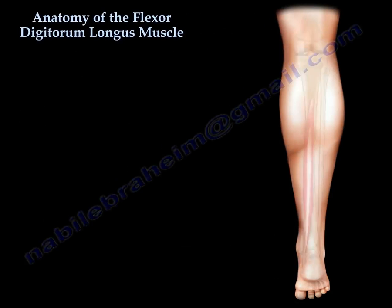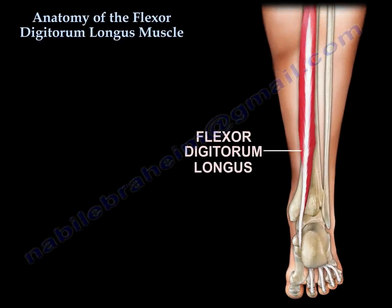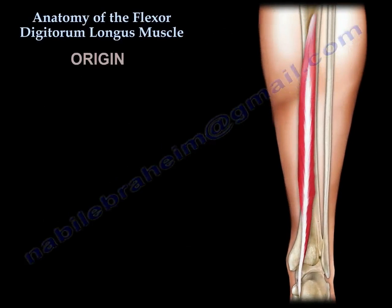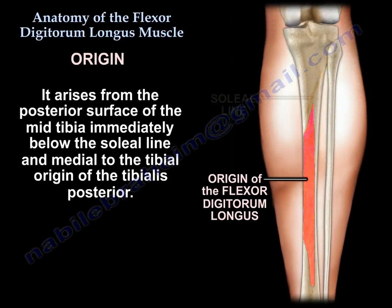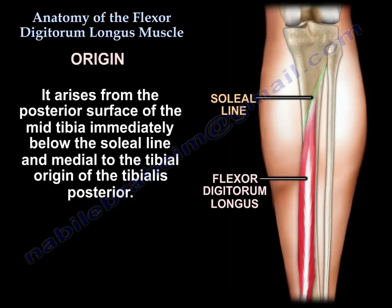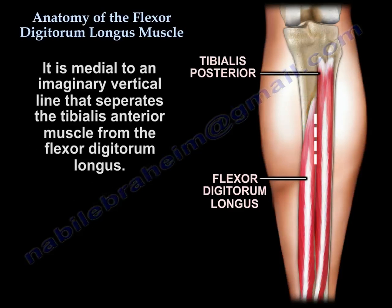Anatomy of the flexor digitorum longus. Origin: it arises from the posterior surface of the mid-tibia, immediately below the soleal line and medial to the tibial origin of the tibialis posterior. It is medial to a vertical line that separates the tibialis posterior from the flexor digitorum longus.